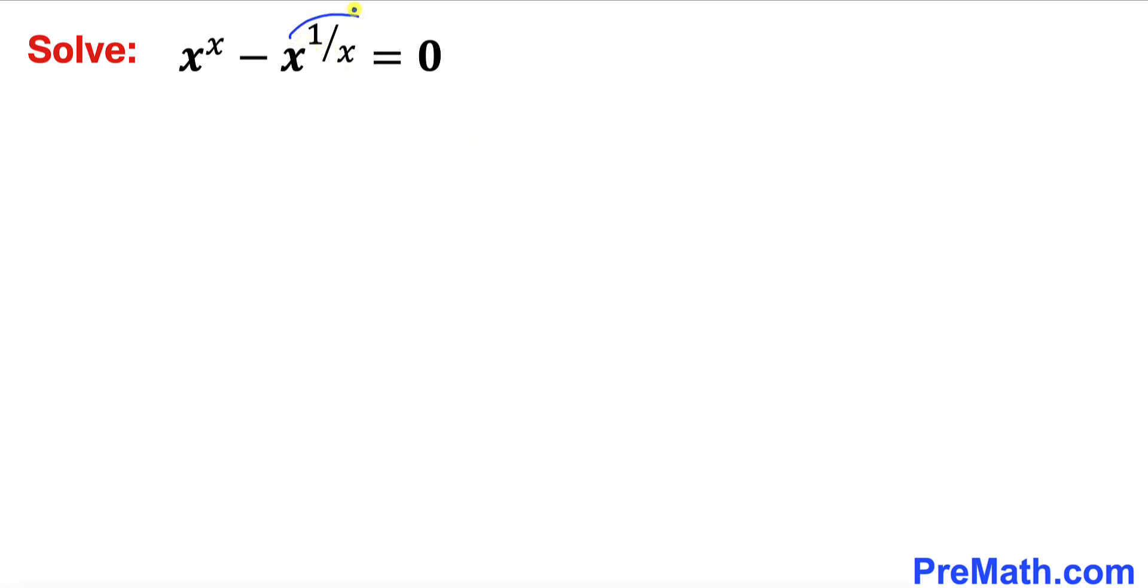Let's move this term x power 1 over x on the other side. Therefore, this equation is going to become x power x equals to x power 1 divided by x.